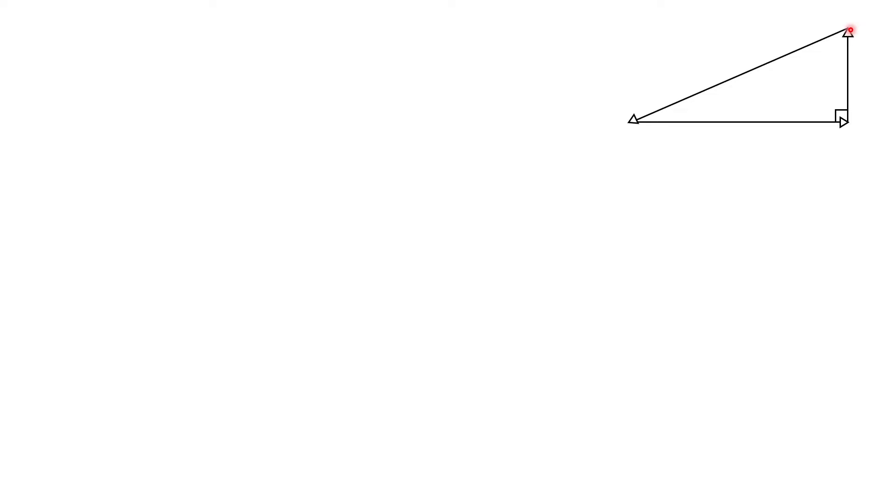You'll see it is a right triangle with a vector down here pointed to the right, a vector right here pointed up, and then we have this final vector right here that makes the hypotenuse of this right triangle, and that points in this direction here.